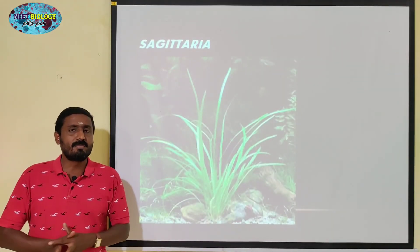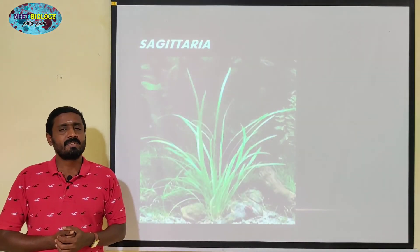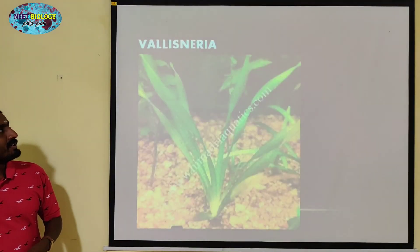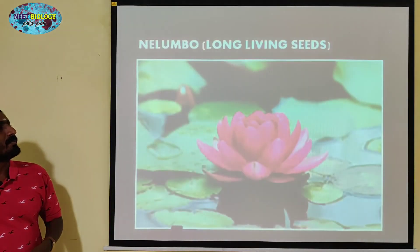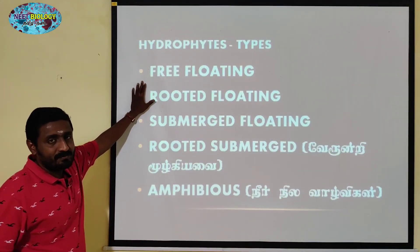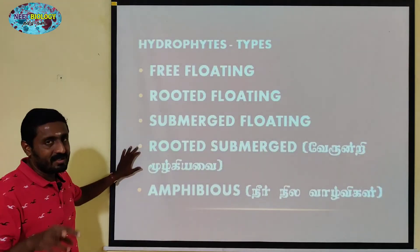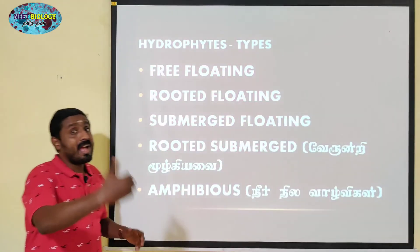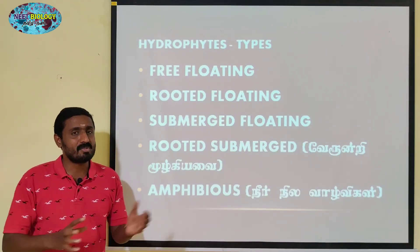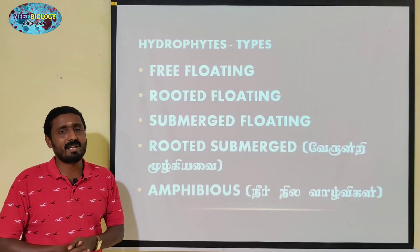Next is Typha. So when we look at hydrophytes, all 5 types are important. Free floating is the first type. Rooted floating is the second type. Submerged floating is the third type. Rooted submerged is the fourth type. Amphibious is the fifth type. We hope you subscribe to Neet Biology.